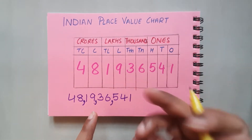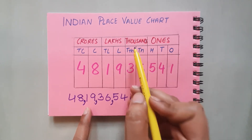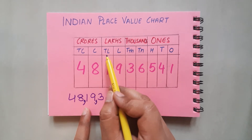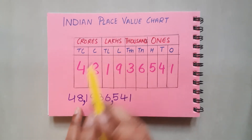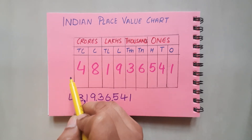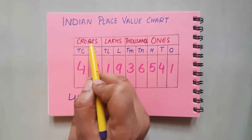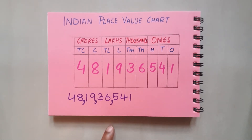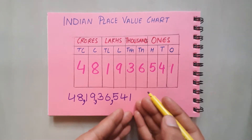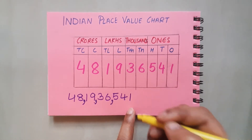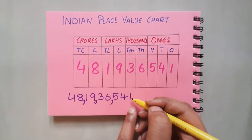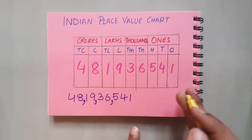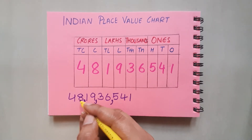Let us quickly revise: in the ones period, how many places do we have? Three places. In the thousands period — thousands and ten thousands. Lakhs and ten lakhs come in the lakhs period. Crores and ten crores come in the crores period. We mark periods by putting commas in the large number, and most importantly, we start counting the places from the ones period — ones, tens, hundreds — then thousands, lakhs, and crores.